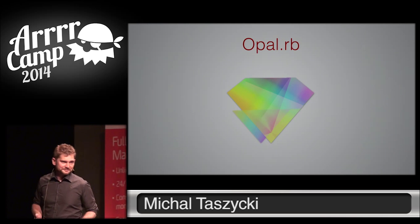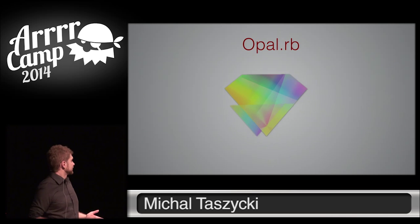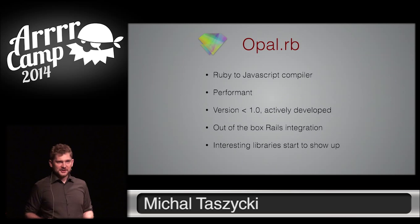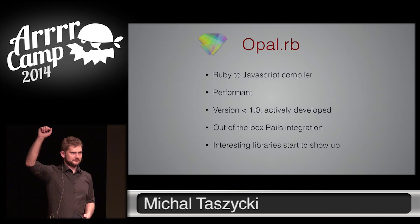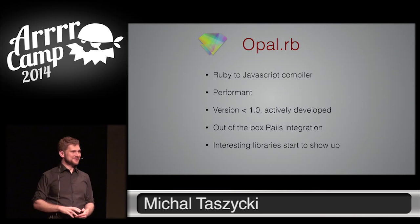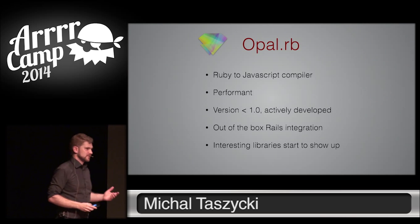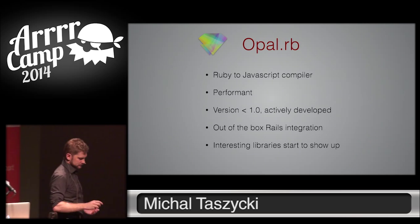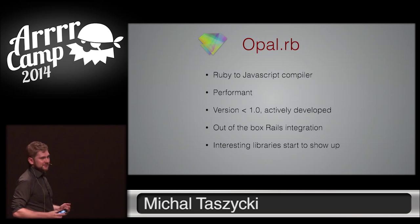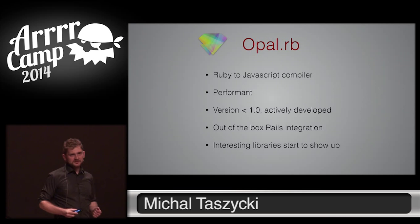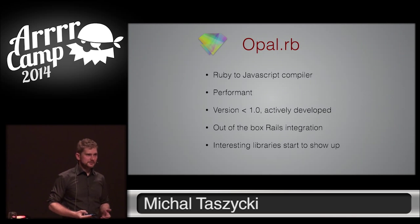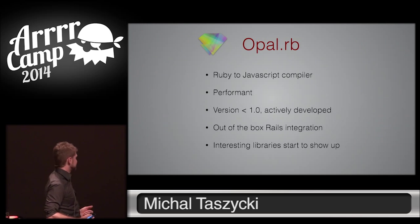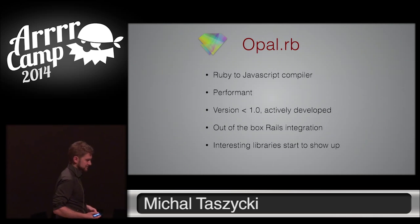With Opal RB, we can create Ruby applications in the browser. Has anyone here used Opal RB before? Great, three people maybe? So, Opal RB is a Ruby to JavaScript compiler. It's quite fast, it's actively developed, it's not that stable yet, but it works. It has some drawbacks, but it allows us to create actual Ruby applications in JavaScript, which is quite a good thing.